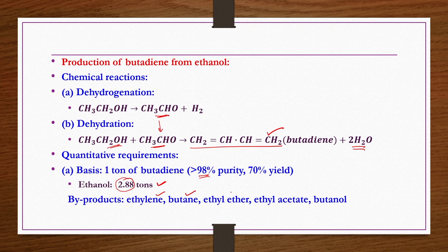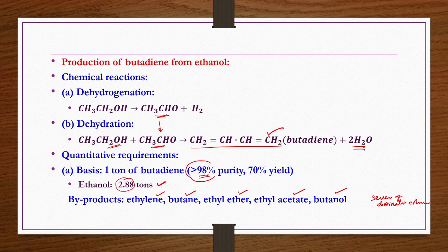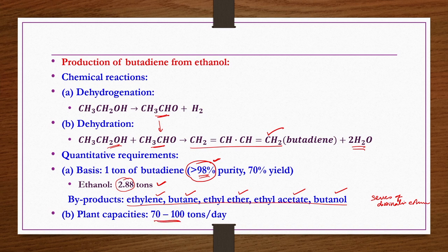Quantitative requirements: to produce 1 ton of butadiene with more than 98 percent purity at 70 percent yield, 2.88 tons of ethanol are required. Byproducts include ethylene, butane, ethyl ether, ethyl acetate, butanol, etc. Because butadiene is used for polymerization to make rubber, impurities acting as polymerization inhibitors must be removed — a series of distillation columns is required. Plant capacity is 70 to 100 tons per day.